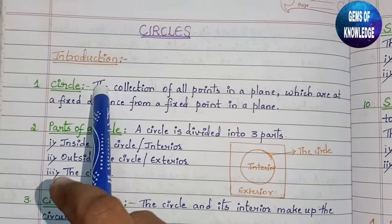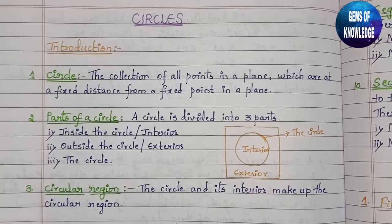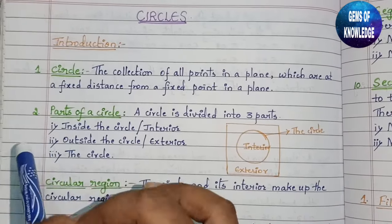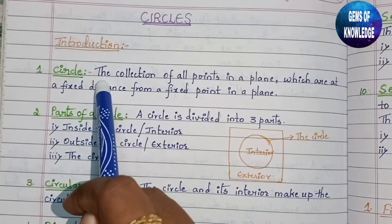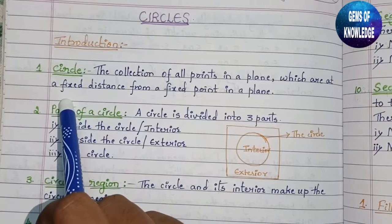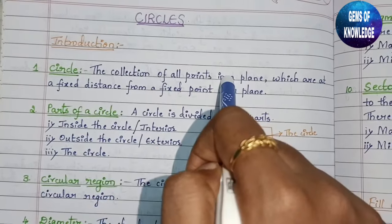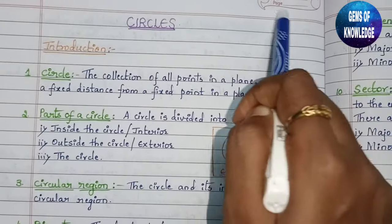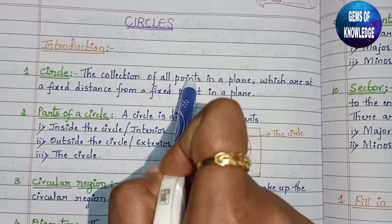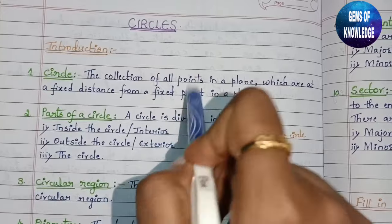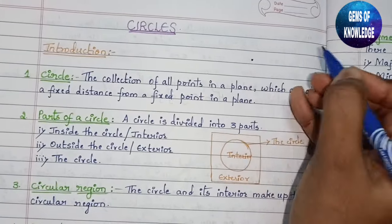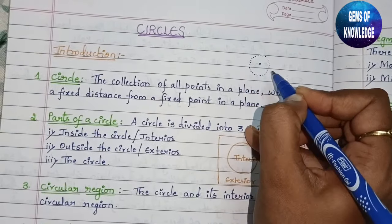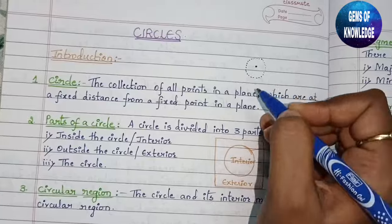We'll quickly start with our video. In the introduction part you need to study a few definitions of the circle. First, what is a circle? A circle is a plane figure — it is the collection of all points in a plane which are at a fixed distance from a fixed point. If you join all those points, you get a circle.